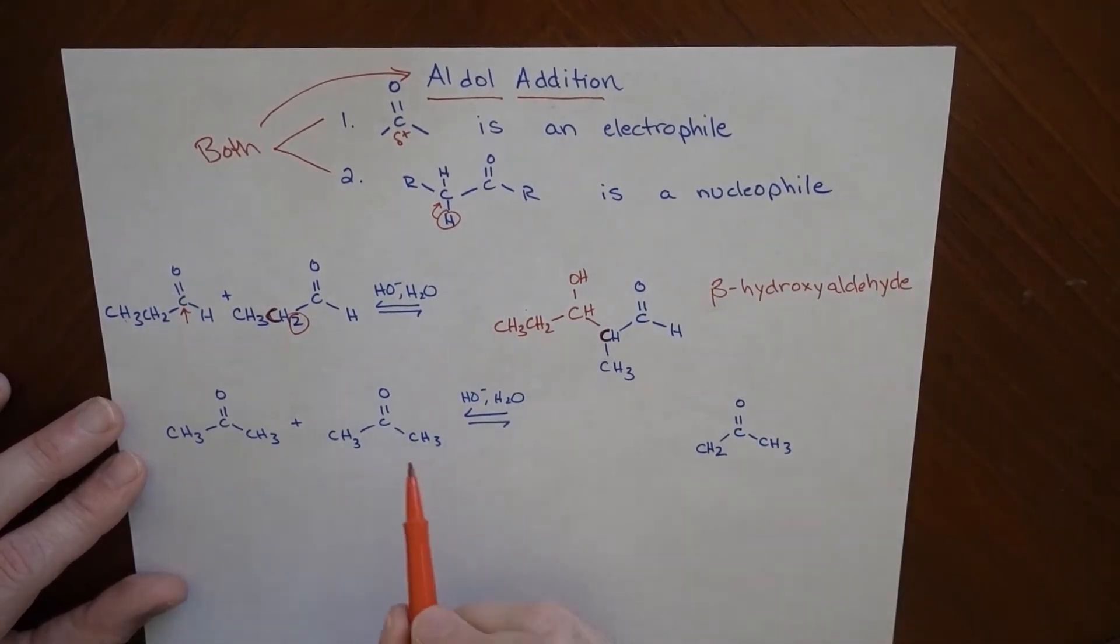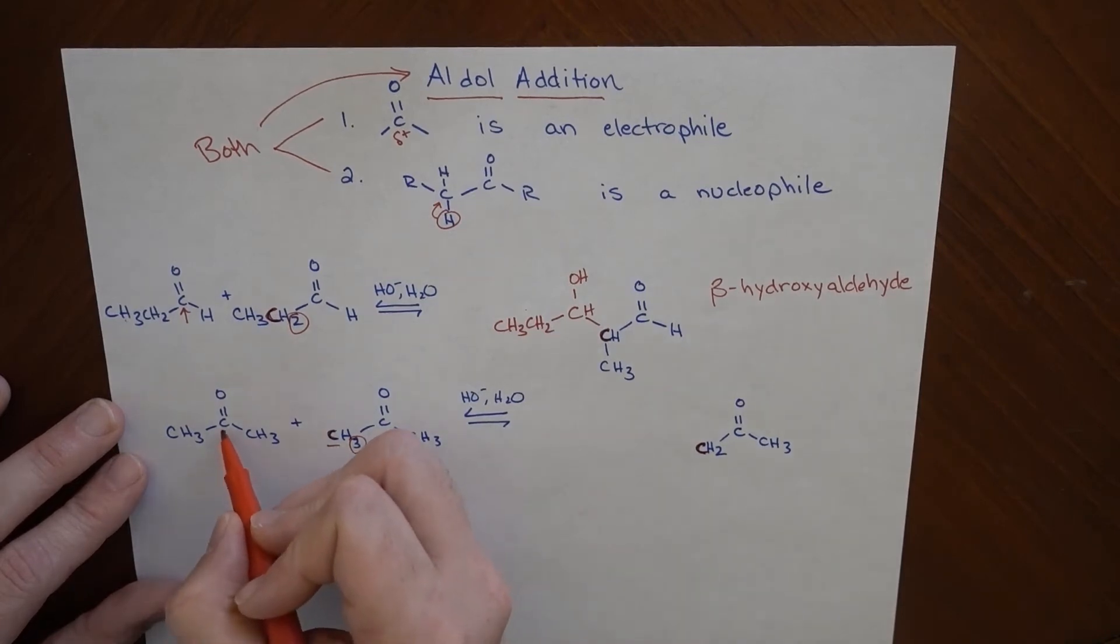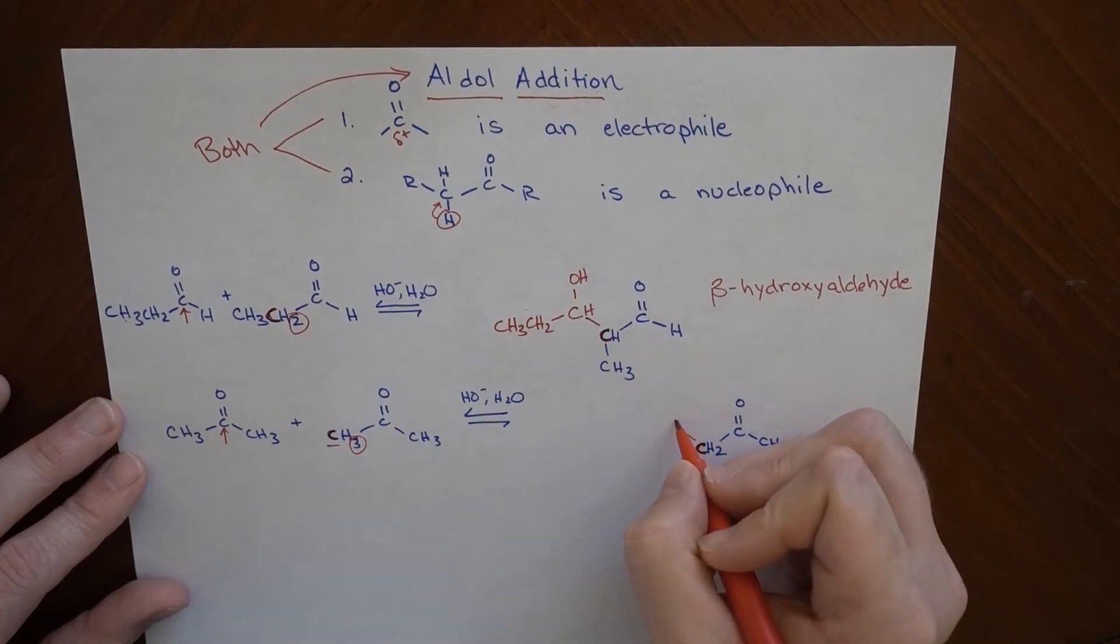Same sort of thing here, if I have two ketones, now these are both my propanones or acetone, and we're doing this in the presence of base. So this base is going to abstract one of these hydrogens from this alpha carbon here. So this carbon is this carbon. And it's going to act like a nucleophile on this carbonyl right here. So that carbon there.